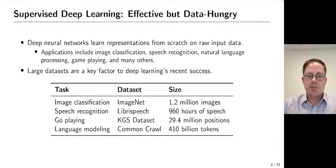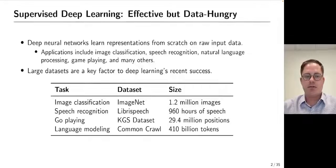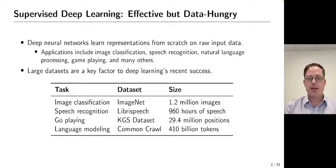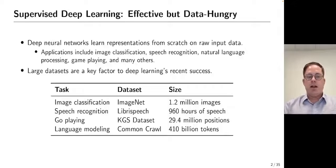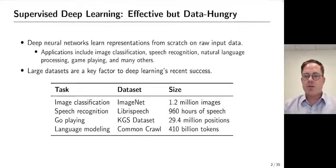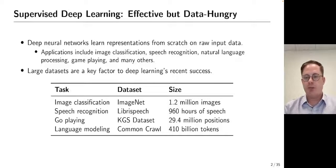First I'd like to motivate the setting a little bit. Deep learning is a powerful class of machine learning algorithms that learn representations from scratch on raw input data. They're useful for a wide range of applications, including image classification, speech recognition, natural language processing, and many others. Deep learning has made tremendous strides in recent years in terms of predictive accuracy, and one of the key factors to their success is the use of large amounts of training data.